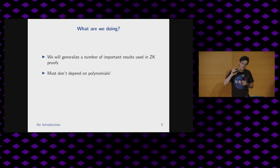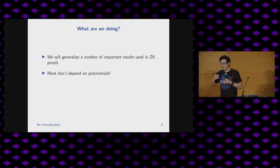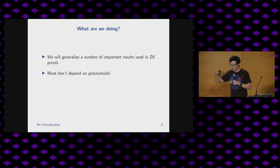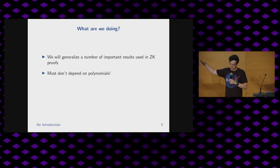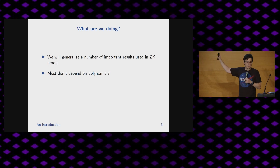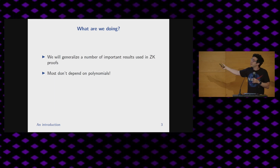Specifically, ZK depends a lot on the fact that polynomials have this very nice structure. They have this property that if you test a specific point of a polynomial with high probability, if it's zero, then with high probability the coefficients of the polynomial must have been zero. We're going to show that actually none of those results depend on polynomials at all.